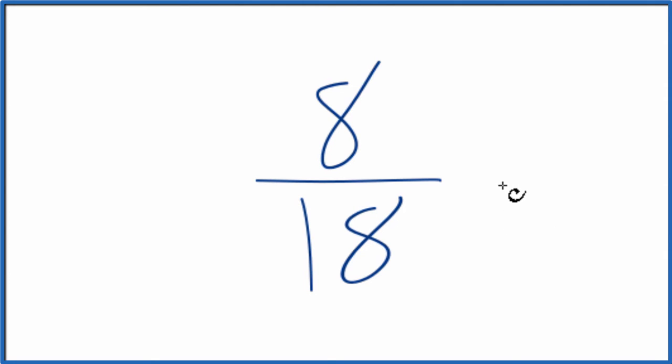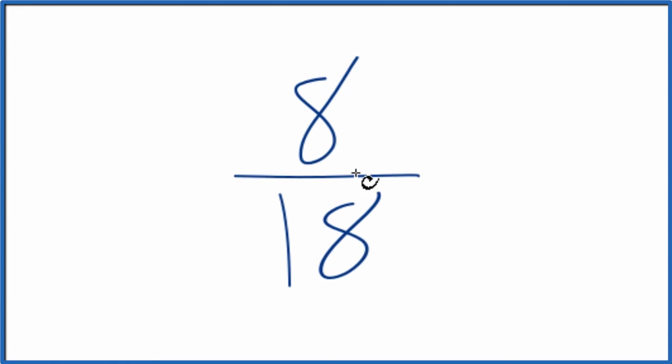To do that, we need to find a common factor, something that goes into both 8 and 18. So let's write the factors for 8 and 18.